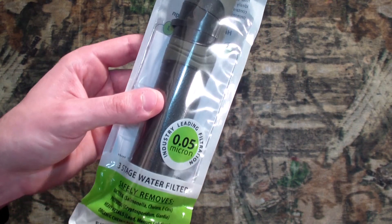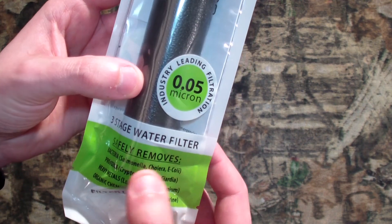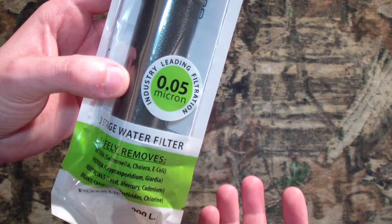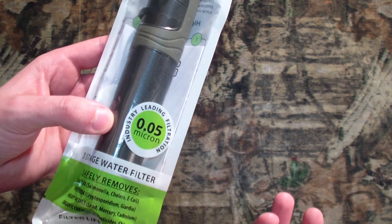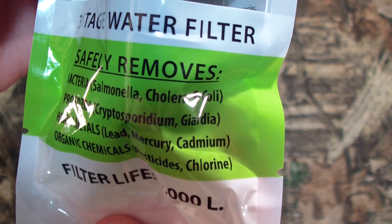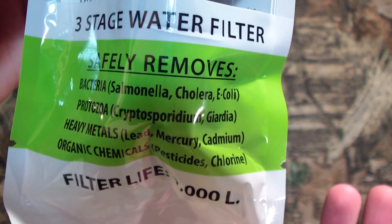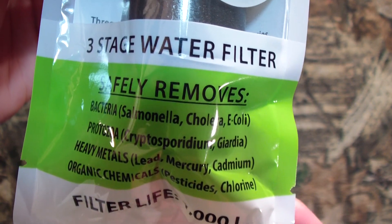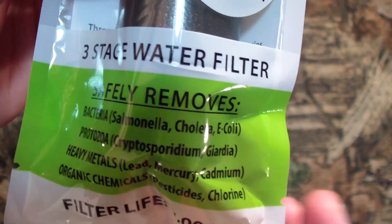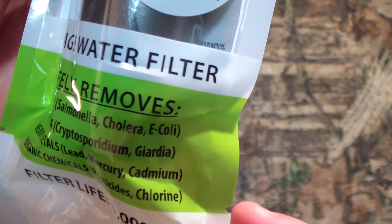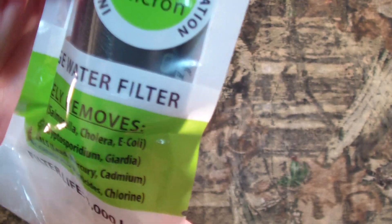0.05, that's a whole other ballgame. That kind of moves you into removing, as is written right here, salmonella, some viruses, E. coli, cholera. I mean you're getting into the removing some viruses range there. Protozoa like Giardia and stuff like that is expected because 0.1 filters will do that. But heavy metals: lead, mercury, cadmium. Organic chemicals, pesticides, and chlorine.